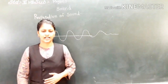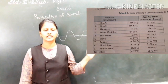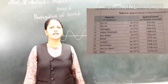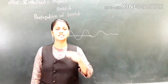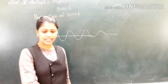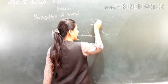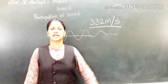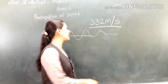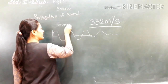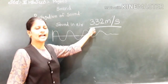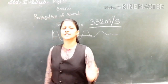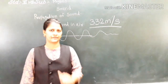There is a chart showing the speed of sound in different materials. The speed of sound in air is 332 meters per second. This is the speed at which sound travels in air.